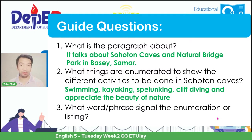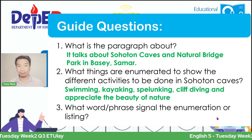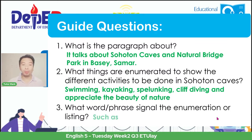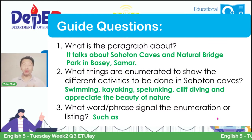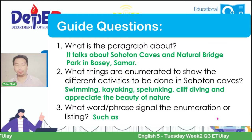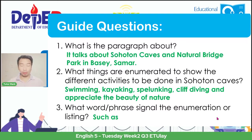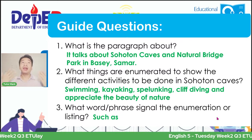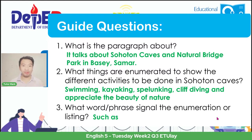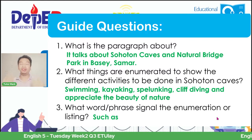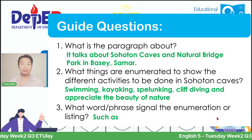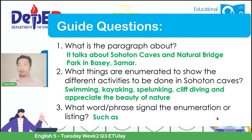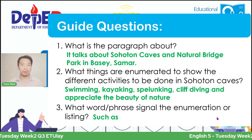And question number three: what word signals the enumeration or listing used here? If we look back, we can see the use of the phrase 'such as.' With all of these things being said, we can have different interpretations or answers here. In number two, perhaps you listed the stalactites and stalagmites instead of the activities—still, you enumerated them, and it's still the same concept. But in this activity the question asks about activities, so these are the possible answers you can write in your self-learning module as a guide.